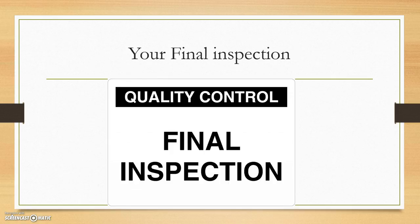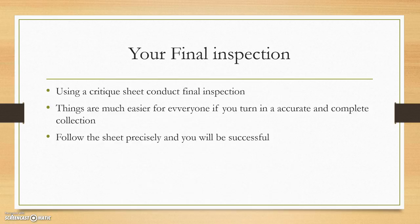The last thing we train you on is your final inspection — your quality control — before you turn in the collection you've completed for inspection and to be prepped to go to the Library of Congress to be archived. This is a big and important step. You need to follow the critique sheet and do the entire critique. It's much easier for everybody if you find any problems yourself. If you follow the sheet precisely, you will not have any problems.